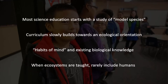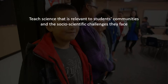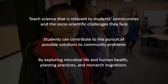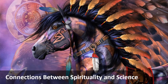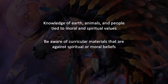Additionally, when ecosystems are taught, they rarely include humans. This reflects a specific cultural belief system about humans and nature that is inconsistent with traditional native perspectives. Teachers can also support student engagement by teaching science in a way that is relevant to students' communities and the socio-scientific challenges they face. Through science, students can contribute to the pursuit of possible solutions to community problems — for example, by exploring cutting-edge science related to microbial life and human health, planting practices and monarch migrations, or food security and adaptations in agriculture. Also, be aware of and treat appropriately the connections native peoples make between spirituality and science, as knowledge of the earth, animals, and people is tied to their moral and spiritual values. Check to see if any curricular materials are offensive or against spiritual or moral beliefs, for example, experiments on or dissections of animals.